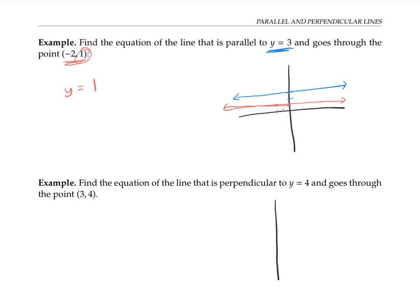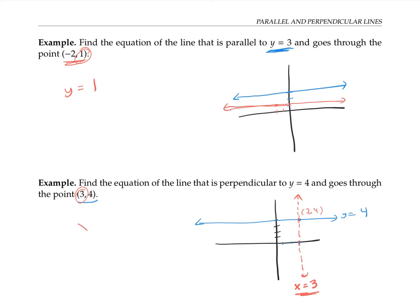In the next example, we want a line perpendicular to the horizontal line y = 4. Perpendicular to a horizontal line means I need a vertical line — specifically one that goes through the point three, four. Vertical lines have the form x equals something. To find what x equals, I look at the x coordinate of the point I'm going through, which is three. All points on this perpendicular vertical line have x coordinate three, so my answer is x = 3.